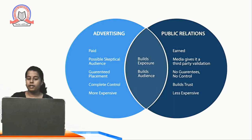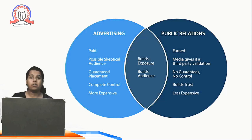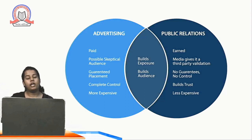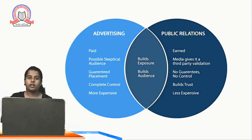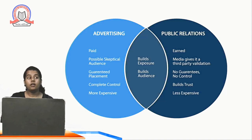Next is guaranteed placement: in PR there are no guarantees and no control — PR can go negative or positive. Many public stunts by heroines, actresses, and actors are done just to gain PR, be it negative or positive. For example, Rakhi Sawant just wants publicity, to grab the audience's attention. Urfi Javed is also one kind of PR — to remain in the media and headlines by any means. But advertising is different — placement is guaranteed on TV, radio, or posters. There is complete control over advertising: how many seconds the ad will be, when it will release, and how many times it will repeat in a day.